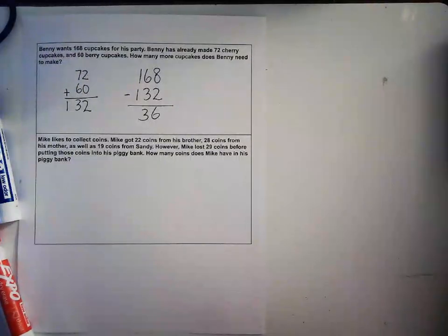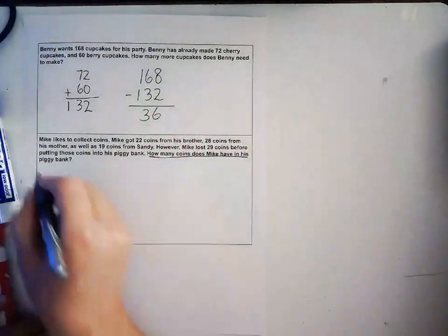The next one says: Mike likes to collect coins. Mike got 22 coins from his brother, 28 coins from his mother, as well as 19 coins from Sandy. However, Mike lost 29 coins before putting those coins into his piggy bank. How many coins does Mike have?